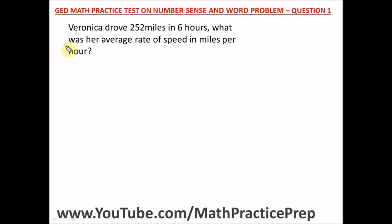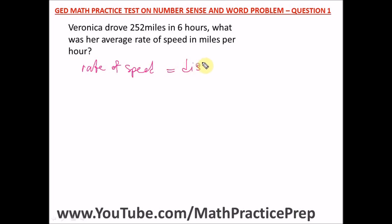Question one: Veronica drove 252 miles in six hours. What was her average rate of speed in miles per hour? To find the rate of speed, remember the formula: it's simply distance over time.